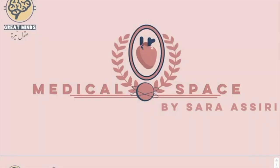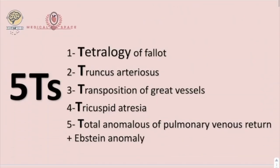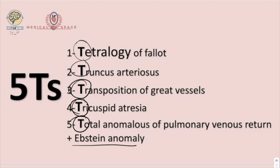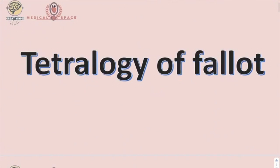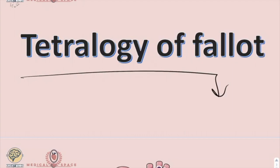This is Medical Space. I am Sara Asiri. I'm going to explain the most common congenital cyanotic heart diseases. The first one is the Tetralogy of Fallot, the second is Truncus Arteriosus, then Transposition of Great Arteries, then Tricuspid Atresia, then Total Anomalous Pulmonary Venous Return, and finally Ebstein Anomaly. They are called the Five T's because they all start with a T, except Ebstein Anomaly.